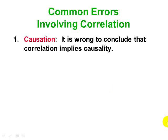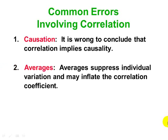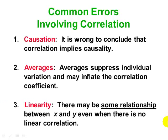Now let's look at some common errors involving correlation. First, even if we find that there appears to be a linear correlation between two variables, that does not mean that one causes the other — correlation and causality are two different things. Another common error is using averages: averages tend to suppress individual variation, so they might inflate the correlation coefficient. Third, there might be some relationship between X and Y even if there's not a linear one.